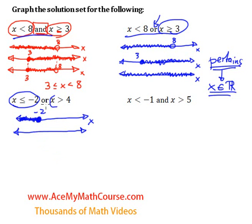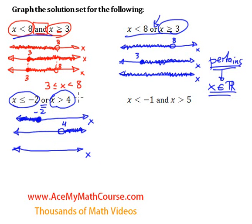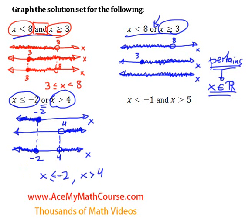Or x is greater than 4. We won't fill in this circle since it's not equal to, and we highlight the area to the right of 4. So what is the solution set for the compound inequality? I'll bring down the negative 2 and the 4 — the 4 is an open dot. We're essentially combining these two: the area to the left of negative 2 and the area to the right of 4, but not including 4, will be part of the solution set. So x is smaller or equal to negative 2, or x is greater than 4, represents the solution set.